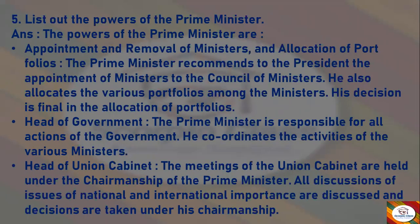Next question: List out the powers of the Prime Minister. Answer: First, appointment and removal of ministers and allocation of portfolios — the Prime Minister recommends to the President the appointment of ministers to the Council of Ministers. He also allocates the various portfolios among the ministers, and his decision is final in the allocation of portfolios.